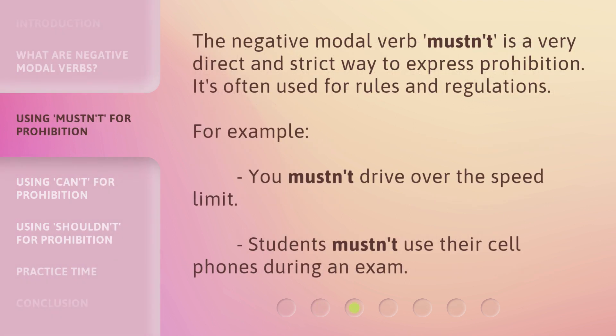The negative modal verb 'mustn't' is a very direct and strict way to express prohibition. It's often used for rules and regulations. For example: you mustn't drive over the speed limit; students mustn't use their cell phones during an exam.